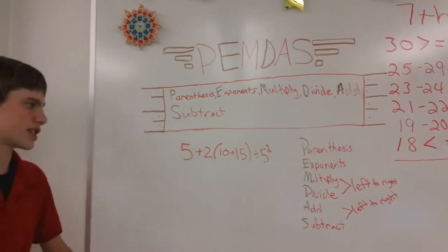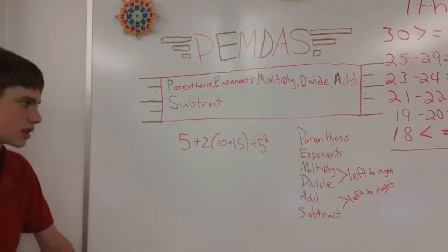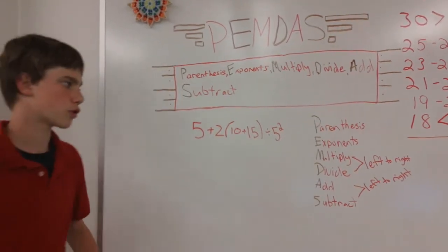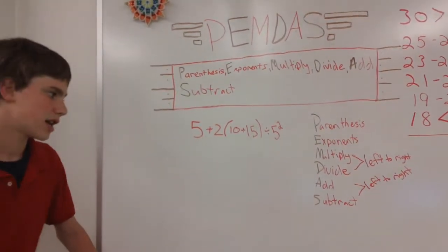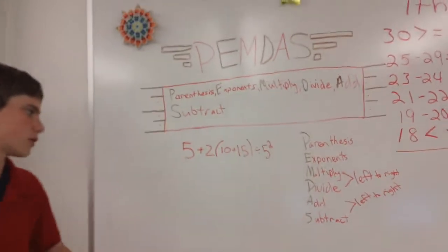First you would do parentheses, second you would do exponents, next you would do multiply or divide, whichever order it is in left to right, and then add and subtract from left to right.